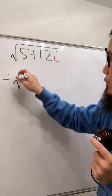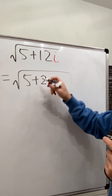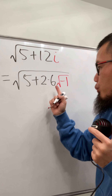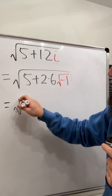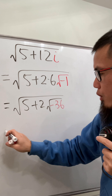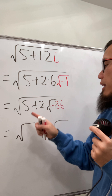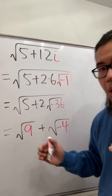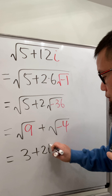We know i is the same as square root of negative 1. We break down 12 as 2 times 6, and bring the 6 inside the square root — 6 is the same as square root of 36 — so we have the square root of 5 plus 2 times square root of negative 36. Now we open two square roots with the plus in between and think about two numbers that add to 5 and multiply to negative 36. The combination is 9 and negative 4. Square root of 9 is 3, and square root of negative 4 is 2i. So we are done.